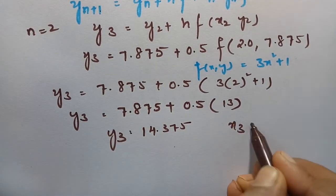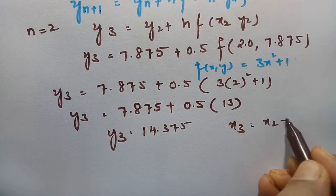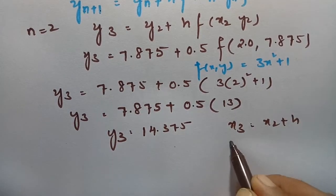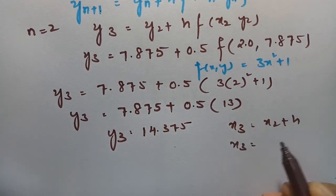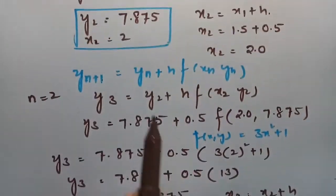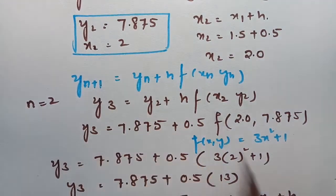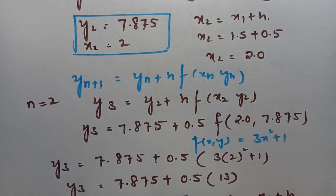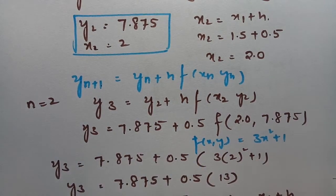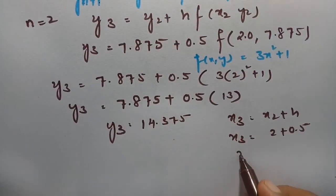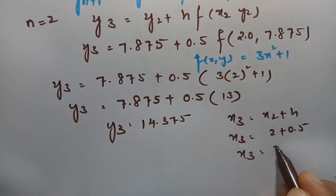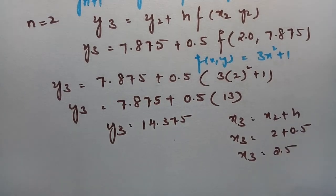What is x₃? x₃ = x₂ + h = 2 + 0.5, so x₃ = 2.5.